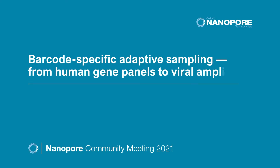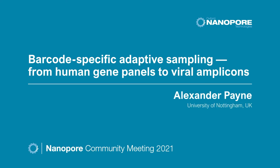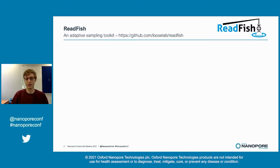Hello, this is barcode-specific adaptive sampling from human gene panels to viral amplicons. I'm Alex Payne from the School of Life Sciences at the University of Nottingham, here to talk about Readentil, or selective sequencing, which is a unique feature of Oxford Nanopore sequencers.